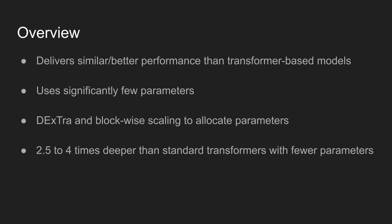The model allocates parameters within each transformer block using a module called DExTra, and allocates parameters across blocks using block-wise scaling. The DeLighT network is 2.5 to 4 times deeper than standard transformers, but it has fewer parameters and operations.